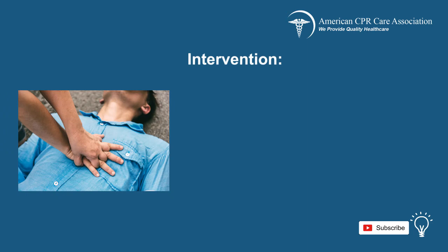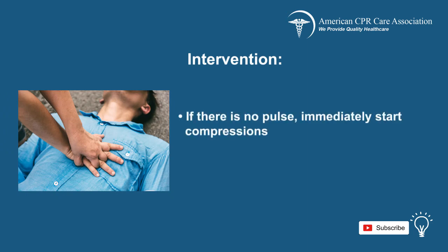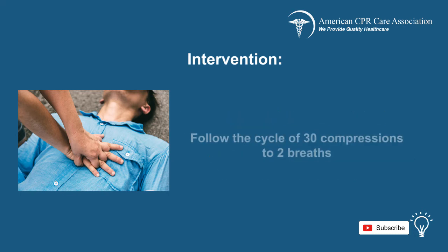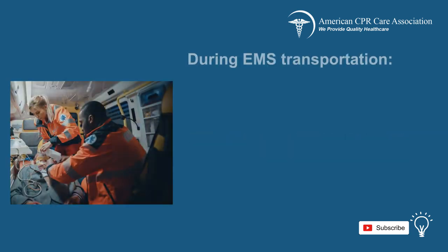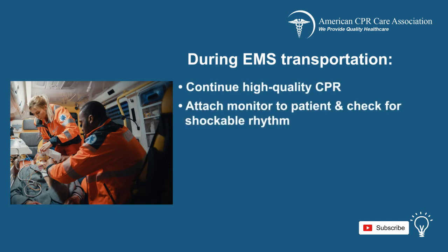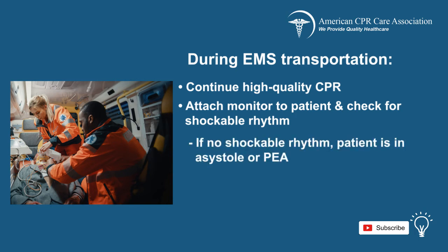Now start with the interventions. If the patient has no pulse, immediately start compressions at a rate of 100 to 120 compressions per minute and allow the chest to fully recoil, following the cycle of 30 compressions to 2 breaths. Prepare to transport the patient to the nearest hospital while continuing with effective CPR. Next, attach a monitor to the patient and check for a shockable rhythm. If no shockable rhythm is present, the patient is in asystole or PEA.